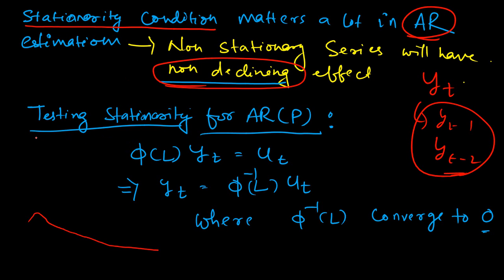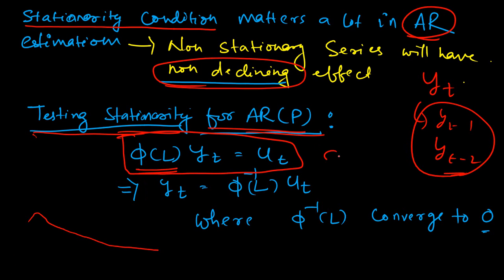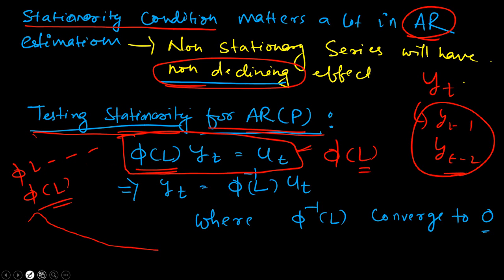How does one test the stationarity condition for an AR(P) series? We can represent the AR(P) series using the theta operator, which is a function of L, the lag operator. We have seen in a previous video how to write it in this way. The theta of L, which is a function of the lag operator, is multiplied by Yt, and on the right-hand side we have the error term. All the lags are taken to the left-hand side and used as a function, treating the entire multiplication of phi values and L terms as a function of L.